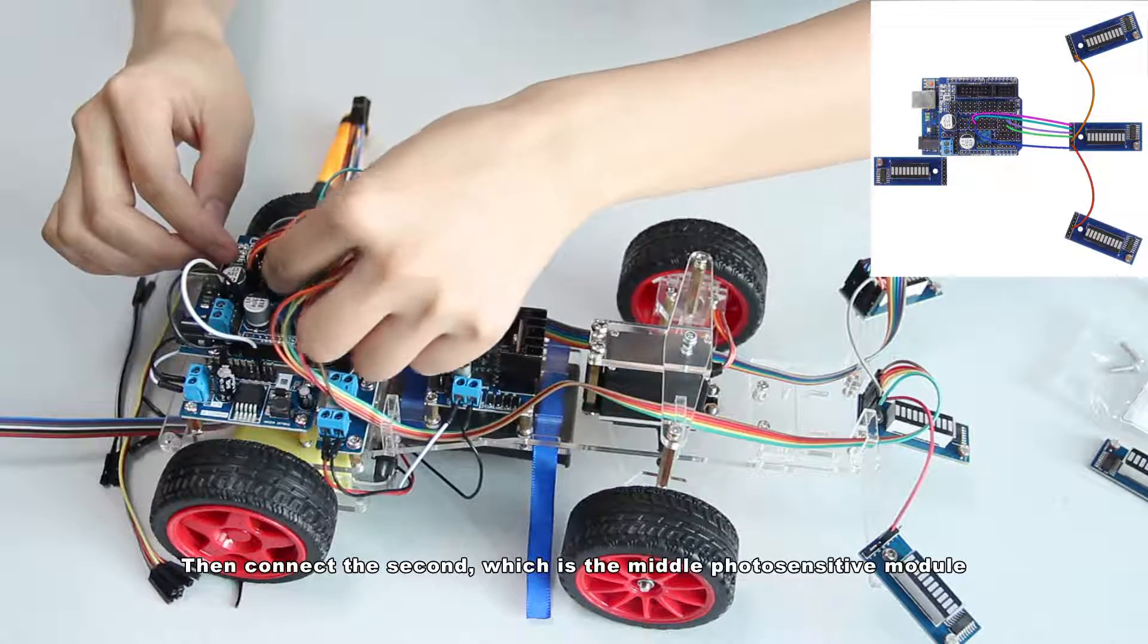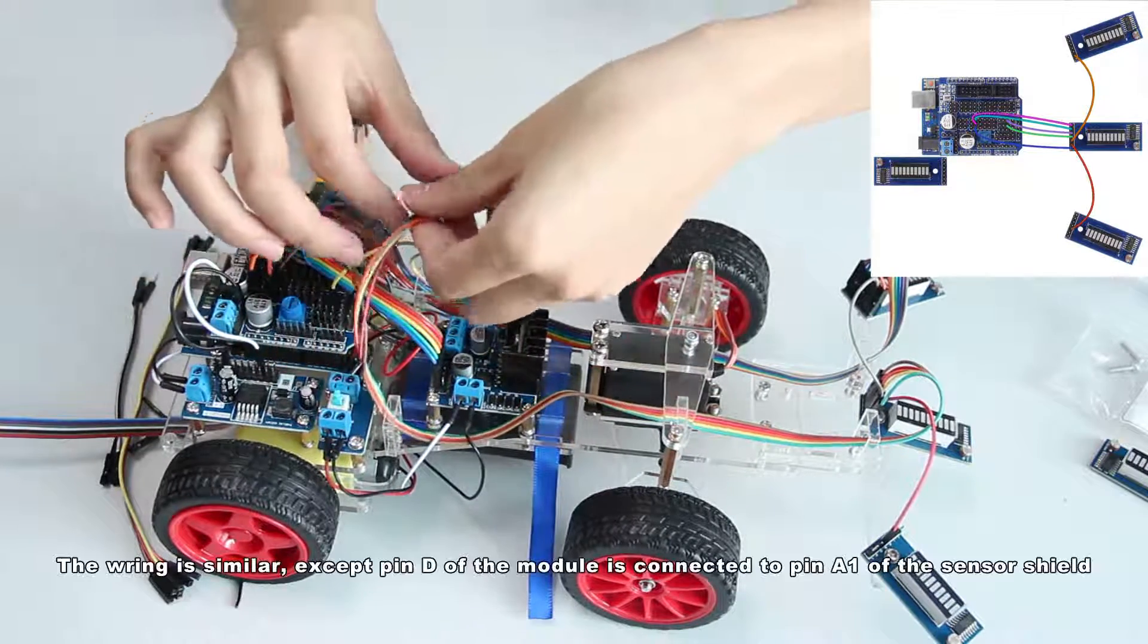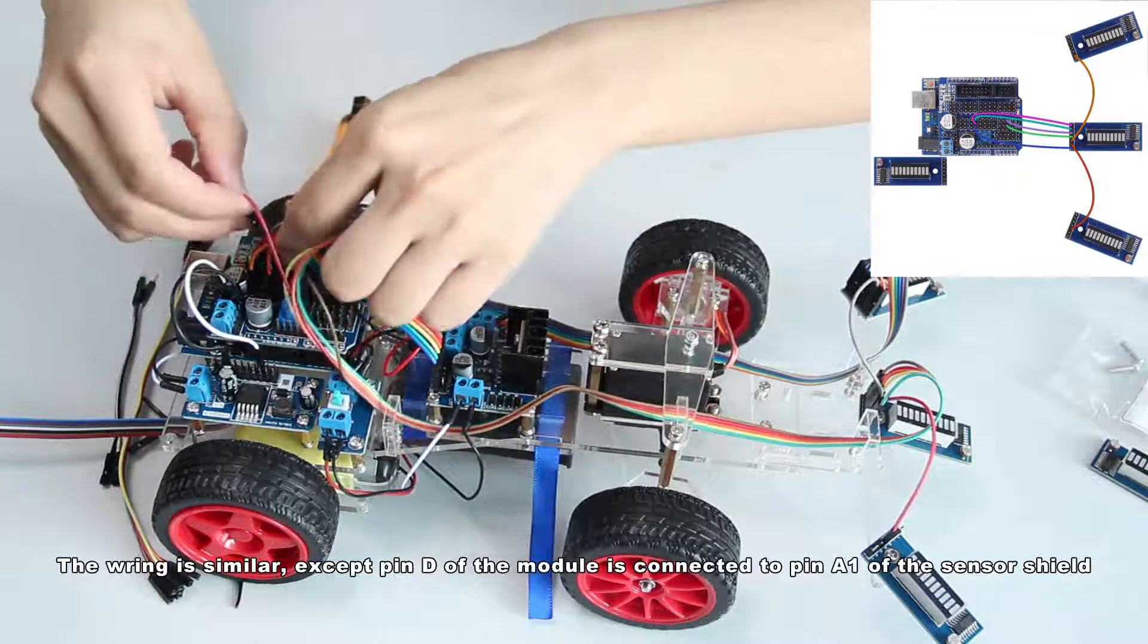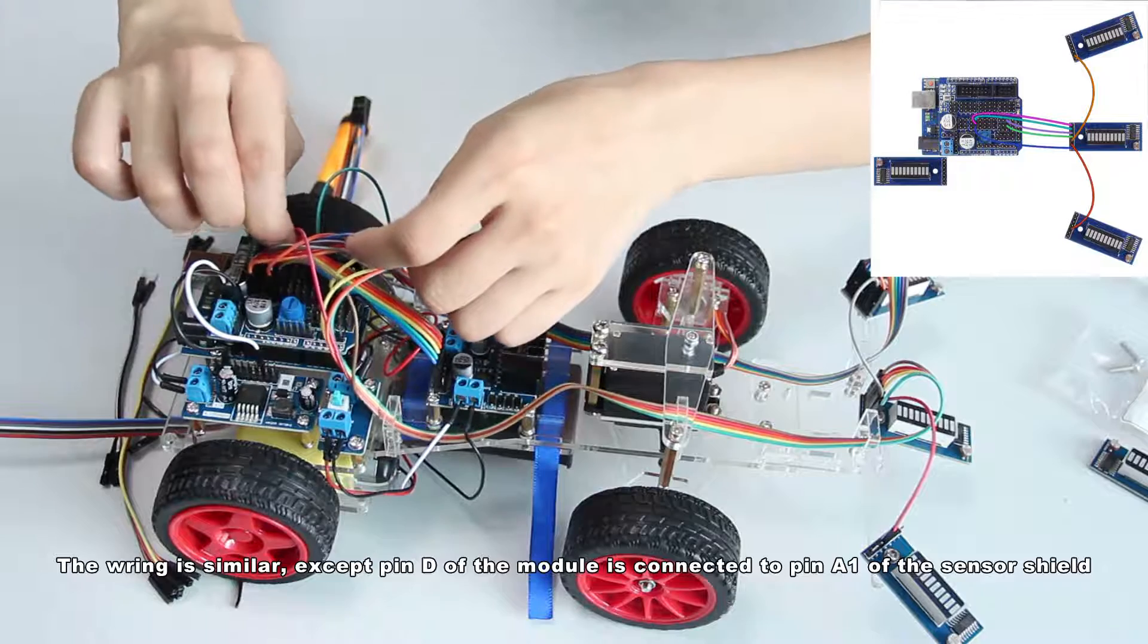Then connect the second, which is the middle photosensitive module. The wiring is similar, except pin D of the module is connected to pin A1 of the sensor shield.